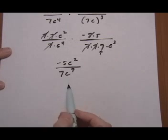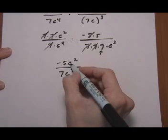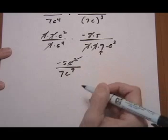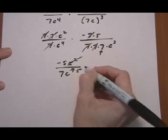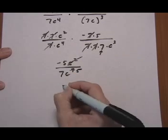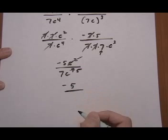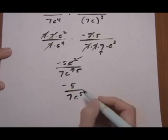And now we can go ahead and cancel out some c's. So if we have 2 c's on top and 7 on the bottom, the 2 on top cancel and that leaves us with 5 on the bottom. So our final answer is minus 5 over 7 c to the fifth.